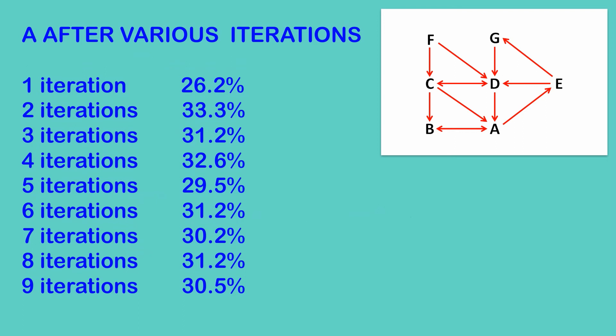So let's just focus on A for a second, see what happens when we keep doing these iterations. So you can see here, as we do more and more iterations, A's importance seems to be approaching a limit of around 31%.